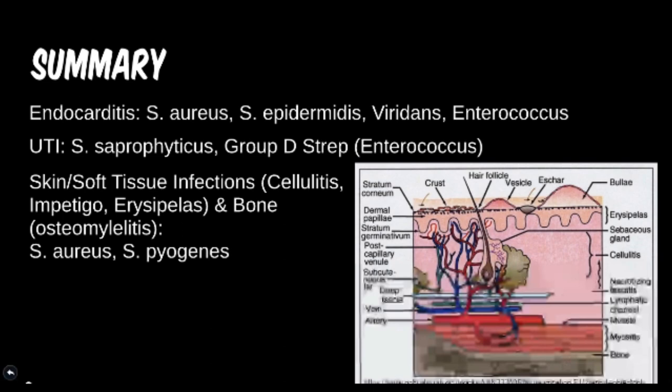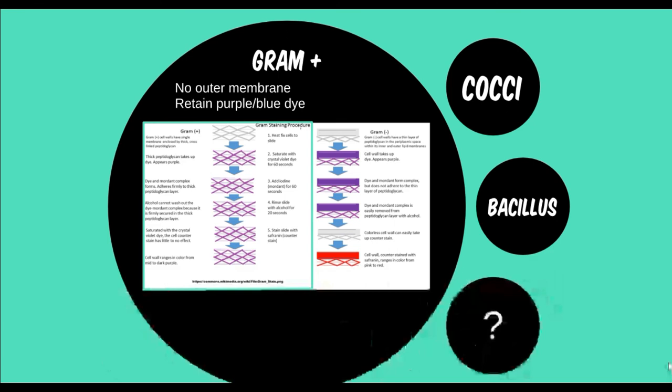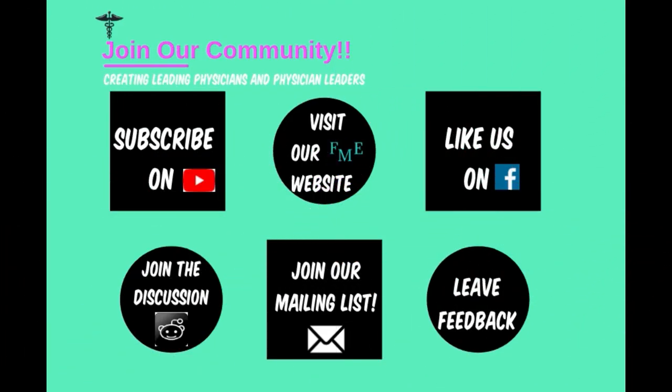Well, that ends it for this video. There's a lot of material, and if it's all new, make sure you review everything at least one more time. Now that we can put more common diseases to particular bacteria, the next topic will cover how we can tell if the patient has a particular disease — this will be explained more in the presentation tier in the next video. In the next video in the series, we'll begin discussing gram-positive bacillus.